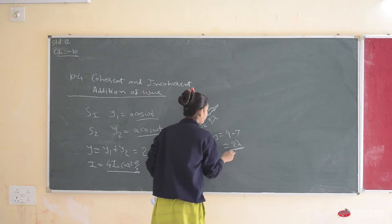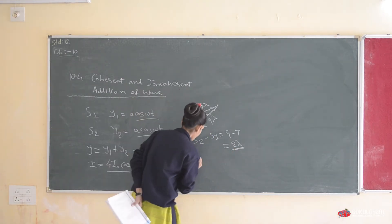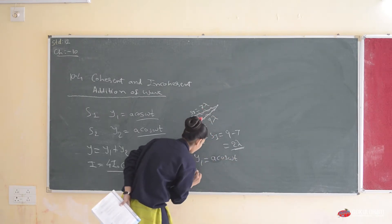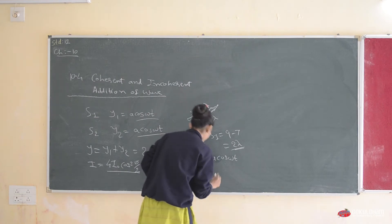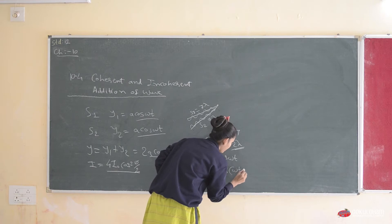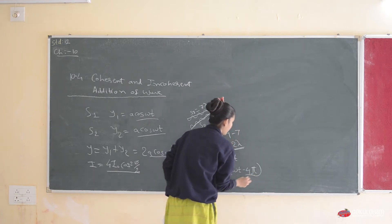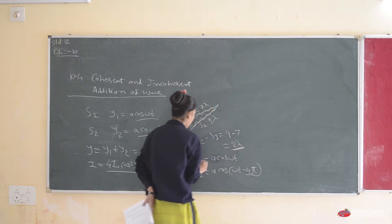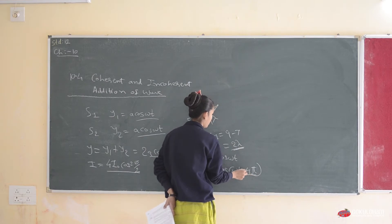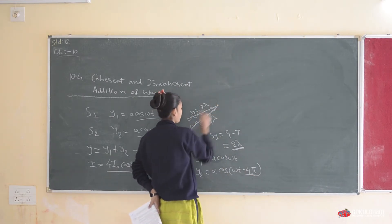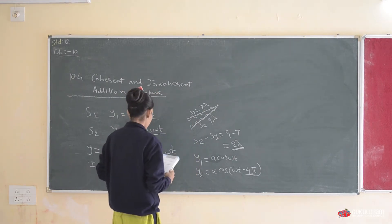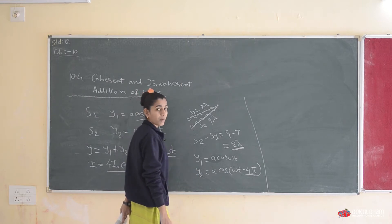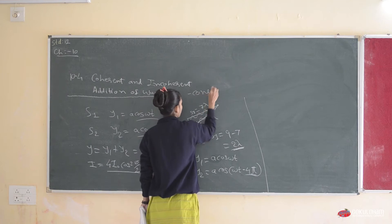Since the answer is positive, we get the displacements: y1 = A cos(ωt) and y2 = A cos(ωt − 4π). Now 4π equals A cos(ωt), so this is an example of intensity maximum, and when we get intensity maximum we get constructive interference.